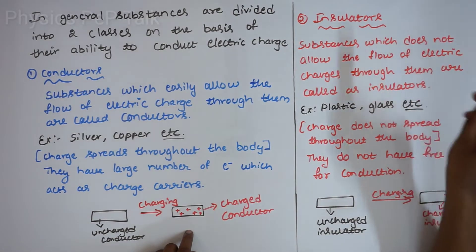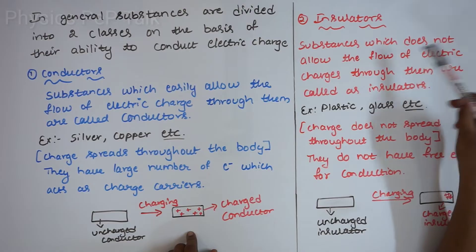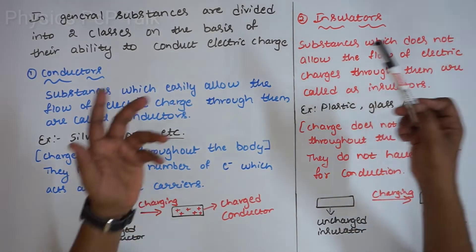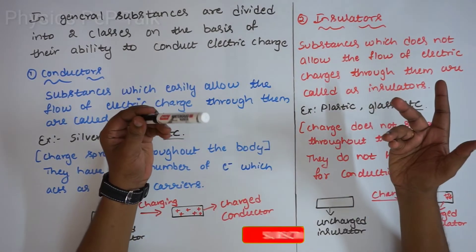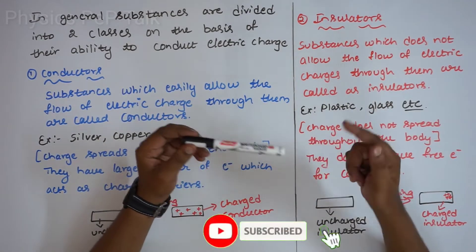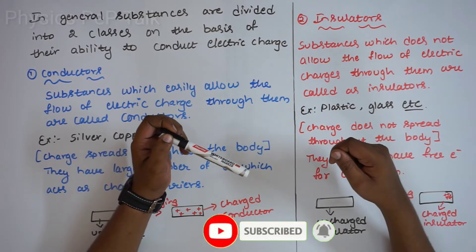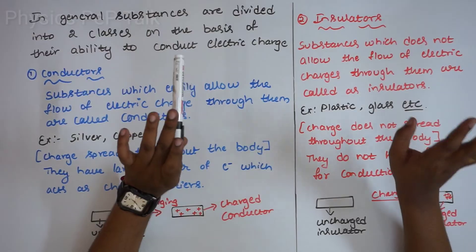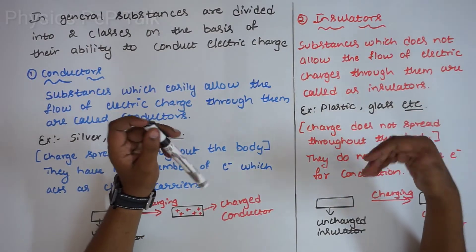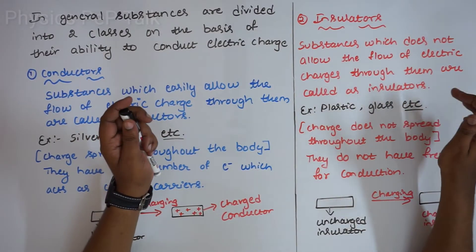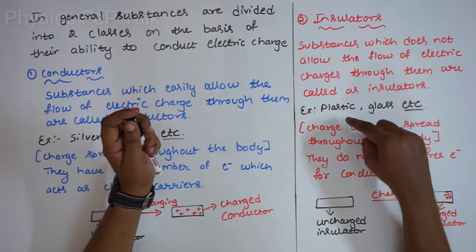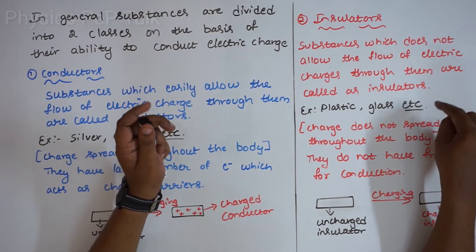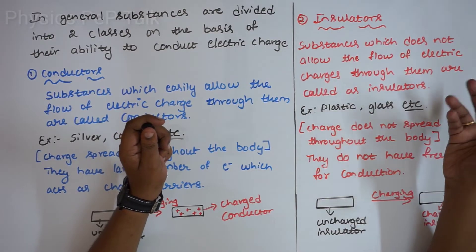The next type is insulators. Substances which do not allow the flow of electric charge through them are called as insulators. An insulator will not conduct. For example, when a plastic rod is connected to the main, charge will not spread because it will not conduct. Best examples are plastic and glass.